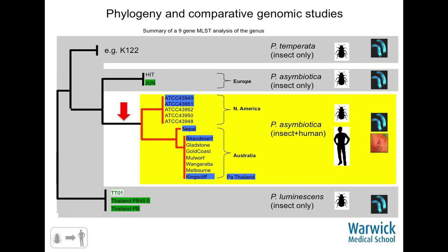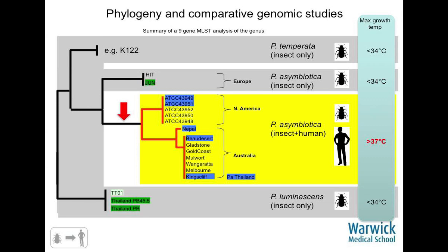What we're trying to do is find what adaptations — what has changed — have allowed these insect pathogens to become human pathogens. One strong clue is that all of the non-clinical isolates will die if you try to culture them above 34 degrees. These are temperature-restricted pathogens; that's why they only infect insects in the environment. All the clinical ones can grow at 37 degrees or even up to 45 degrees in one isolate — far more temperature-tolerant. There's no way you could be infecting a human, going bacteraemic, passing through the core of the body, if you were killed above 34 degrees. So these necessarily had to evolve tolerance to that temperature.